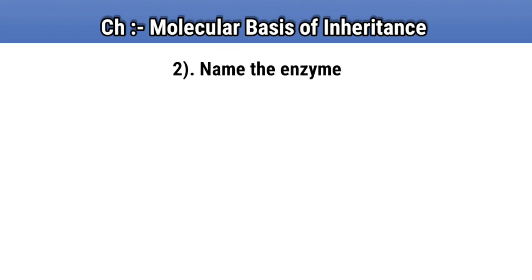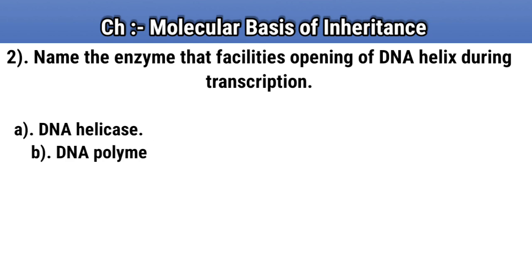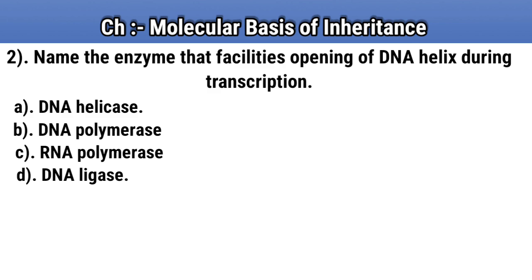Question number 2. Name the enzyme that facilitates opening of DNA helix during transcription. Option A: DNA helicase. Option B: DNA polymerase. Option C: RNA polymerase. Option D: DNA ligase. Answer C: RNA polymerase.